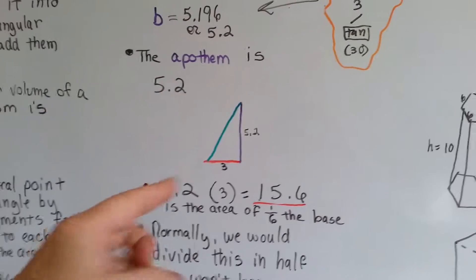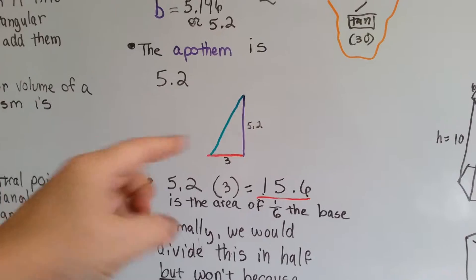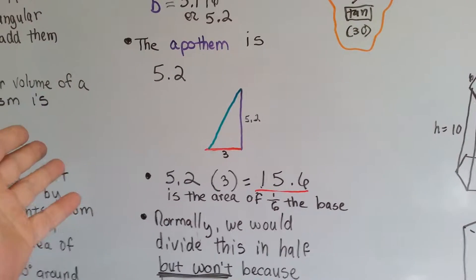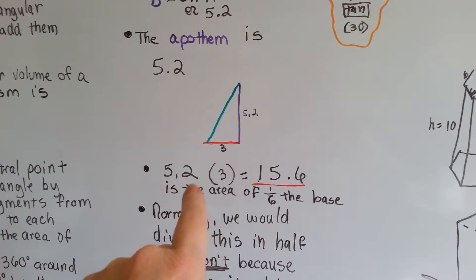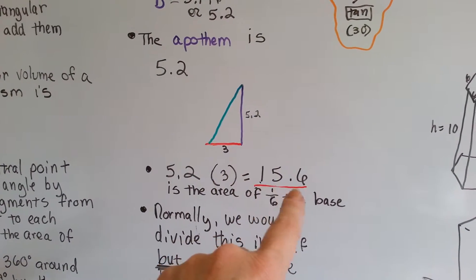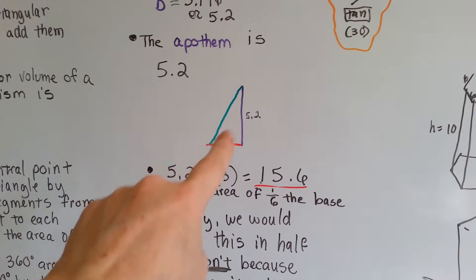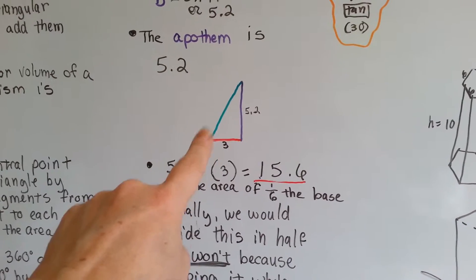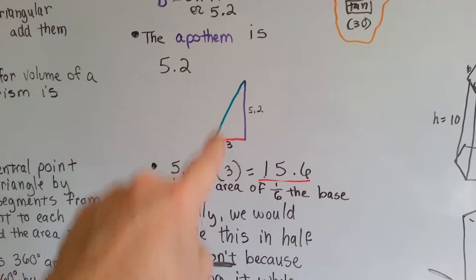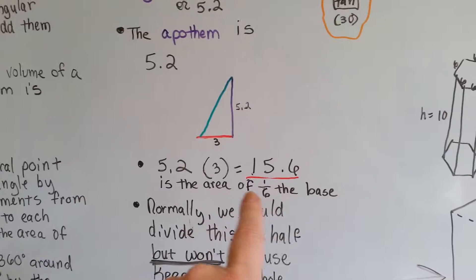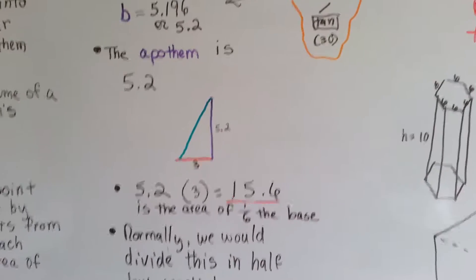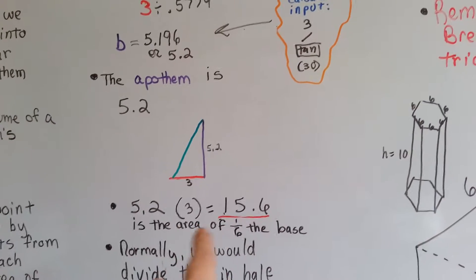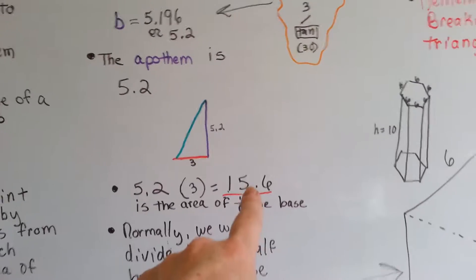Now that we've got that, you know the area of a triangle is length times width and cut it in half, right? So we have the 5.2 times 3, which comes out to 15.6. But that would be for a rectangle, right? It would be for two of these triangles, right? That would be the area for one-sixth of the base, this 15.6.